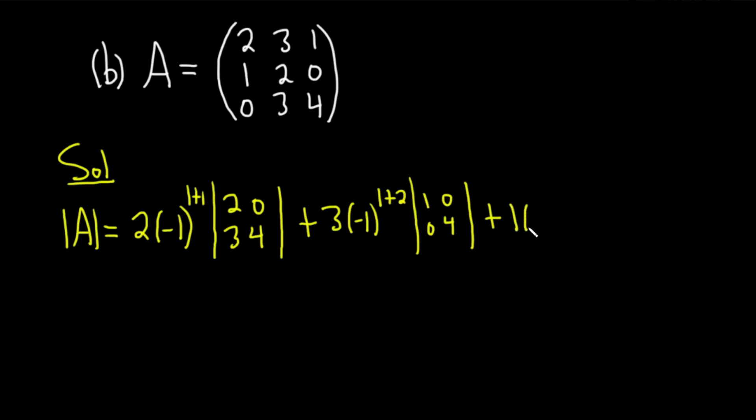Hopefully you always have the negative 1, and then it's row plus column. This time we're in the first row, third column, so it's 1 plus 3. And you multiply by the determinant of the remaining submatrix that you get when you cross out the corresponding row and column. So 1, 2, 0, 3. Write it. 1, 2, 0, 3.